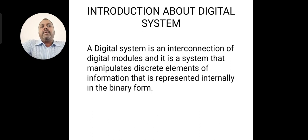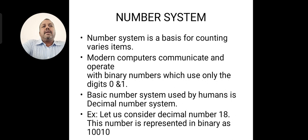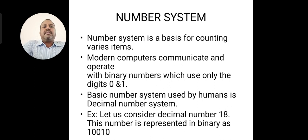First of all, we are knowing about what do you mean by the binary system. It also has two symbols, that is zeros and one. A number system is a basic means of counting various items. The main purpose is we are going to count the values. Modern computers communicate and operate in the number system with binary numbers, which uses only two different types of digits or symbols — zeros and one.